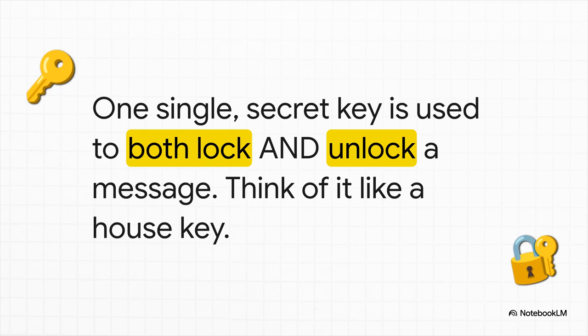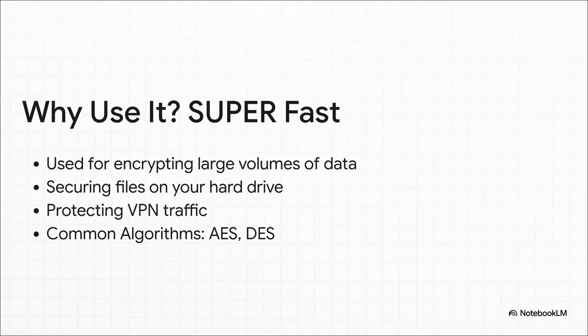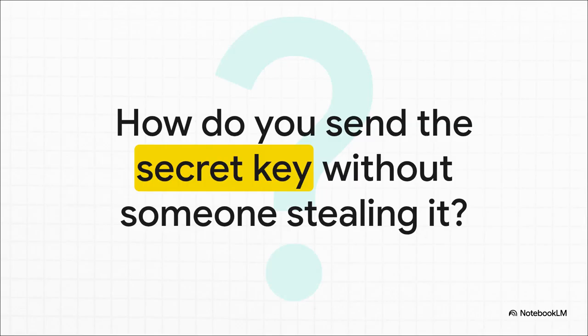This is called symmetric encryption. One single secret key is used to both lock the message and unlock it — just think of it like your house key. The very same key you use to lock the door is the exact one you need to get back inside. So why use it if it's got a flaw? One word: speed. Symmetric encryption is an absolute workhorse because it's so incredibly fast — protecting huge amounts of data, like all the files on your computer's hard drive, or the massive stream of data that flows through a VPN. This is where industry-standard algorithms like AES do the heavy lifting. But here's the fatal flaw: how do you get that single secret key to your friend in the first place? If you just send it over the internet, a hacker could snatch it out of the air. And if they have the key, they have everything. This is what's known as the key distribution problem, and it's a huge one.